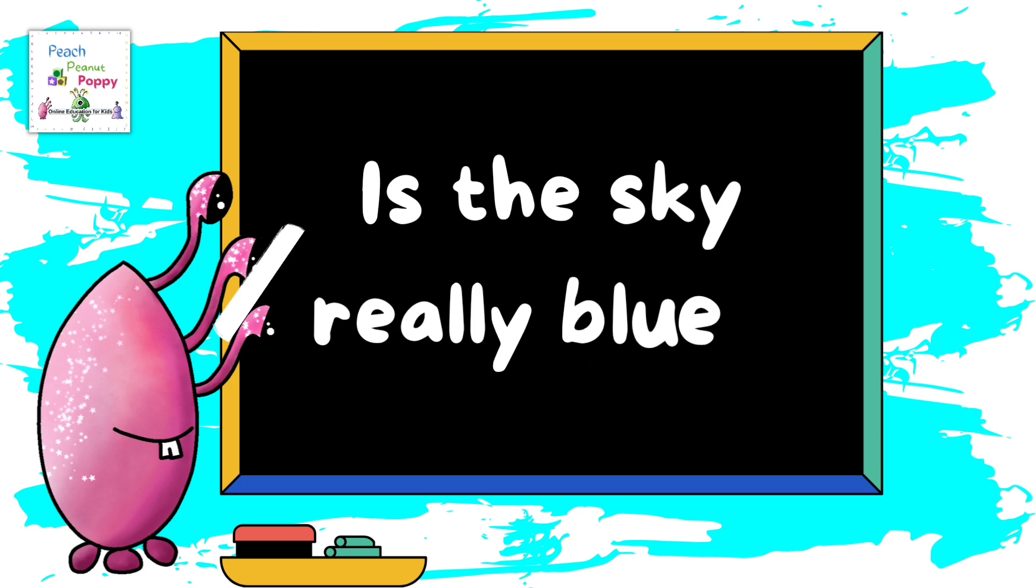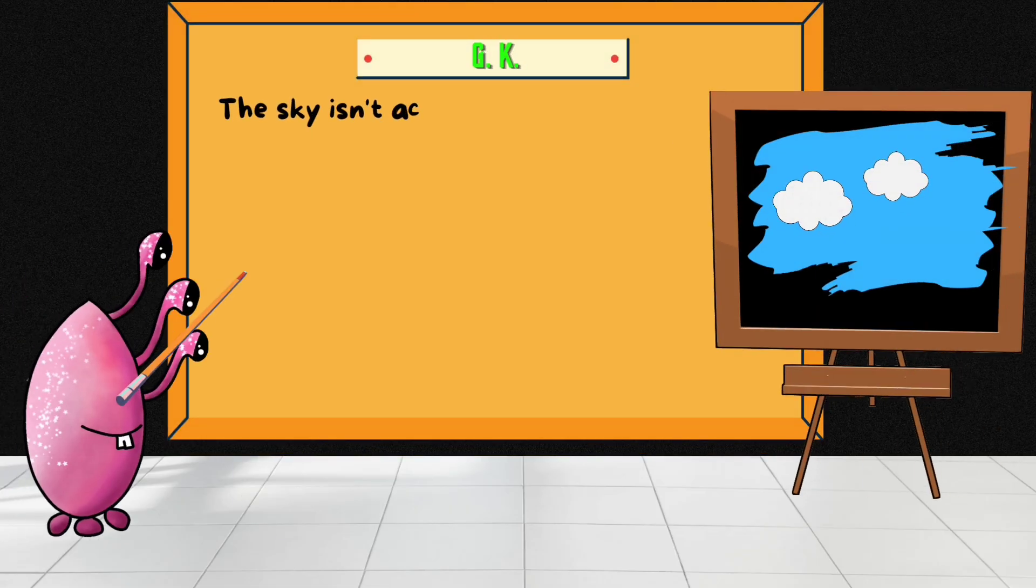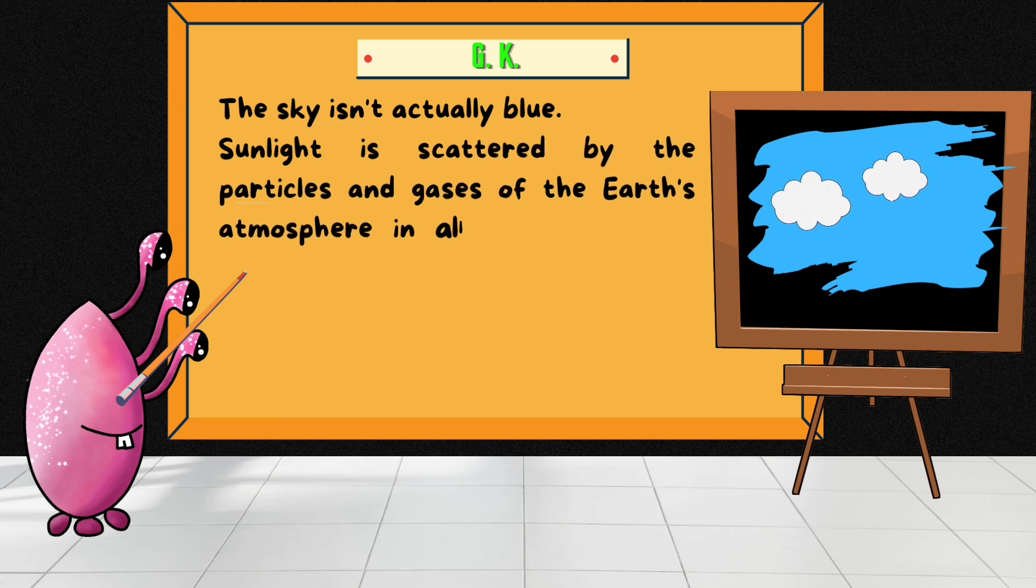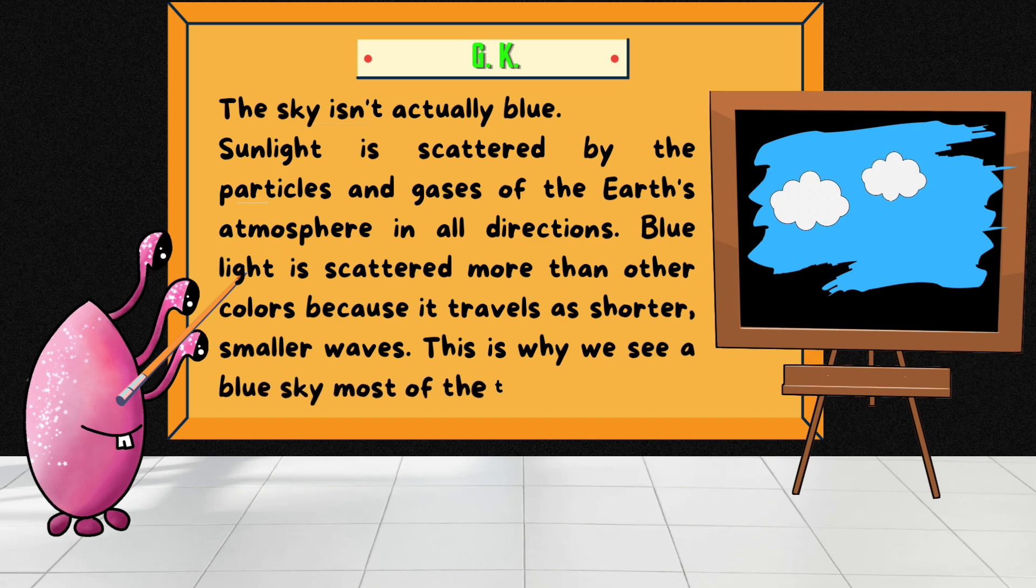Is the sky really blue? The sky isn't actually blue, but the sunlight is scattered by the particles and the gases of the Earth's atmosphere in all directions. The blue light is scattered more than other colors because it travels shorter, smaller waves. This is why we see a blue sky most of the time.